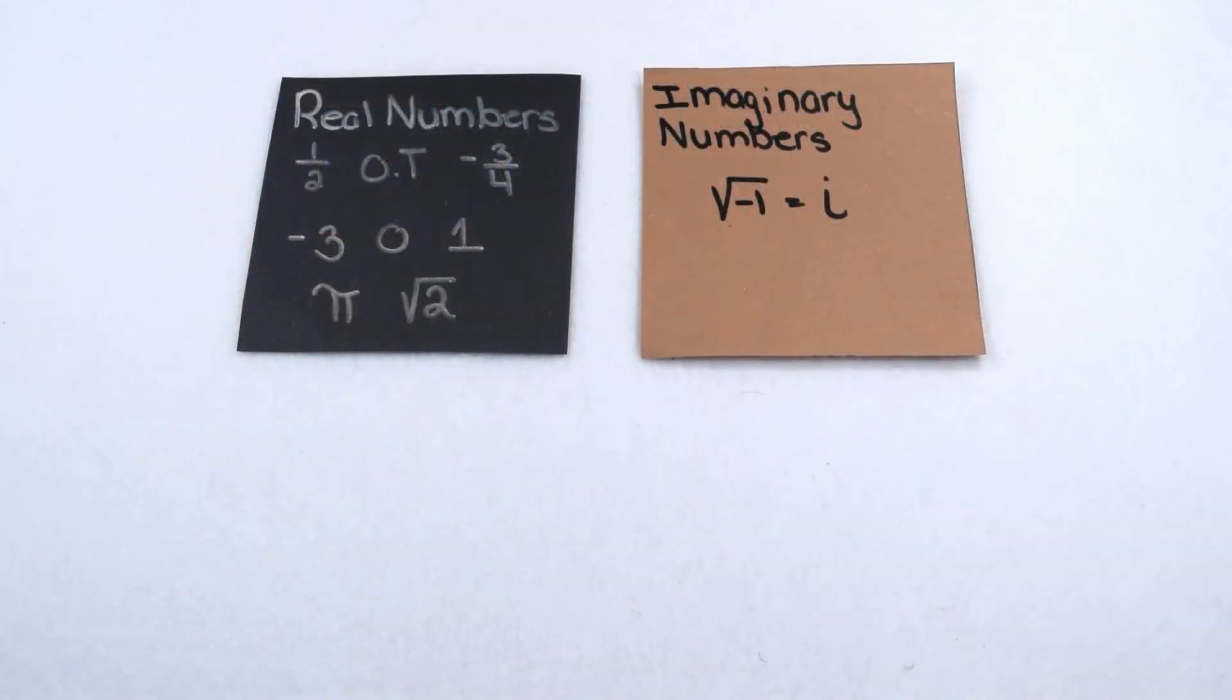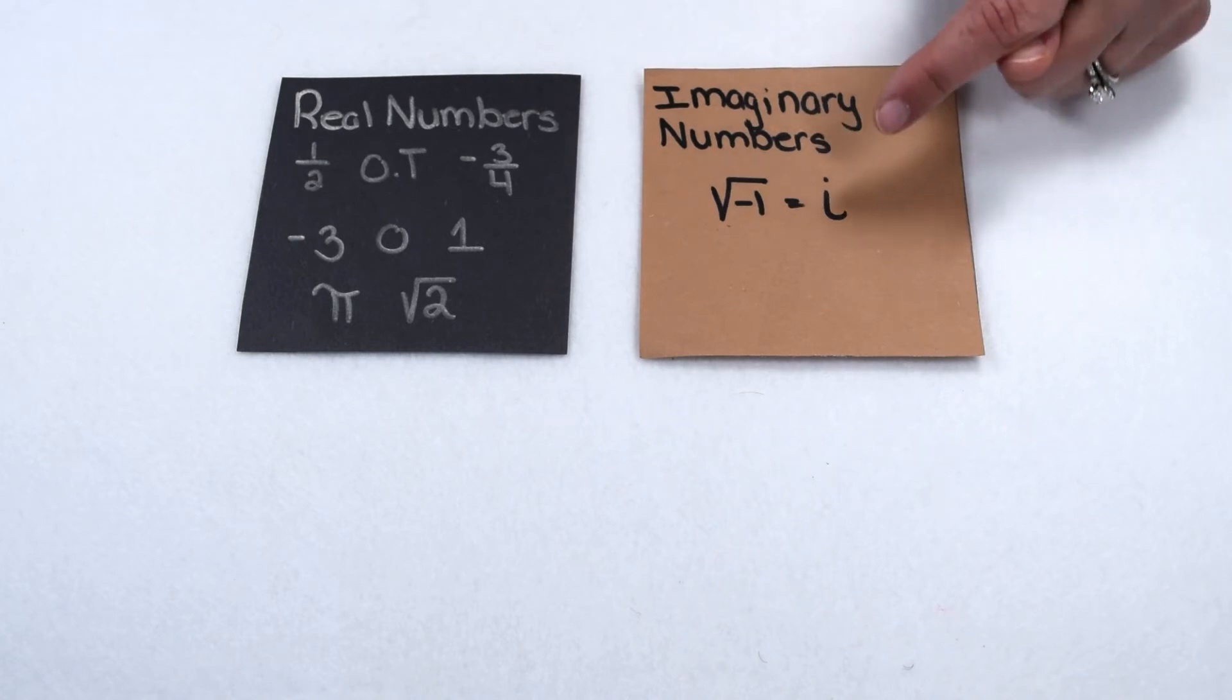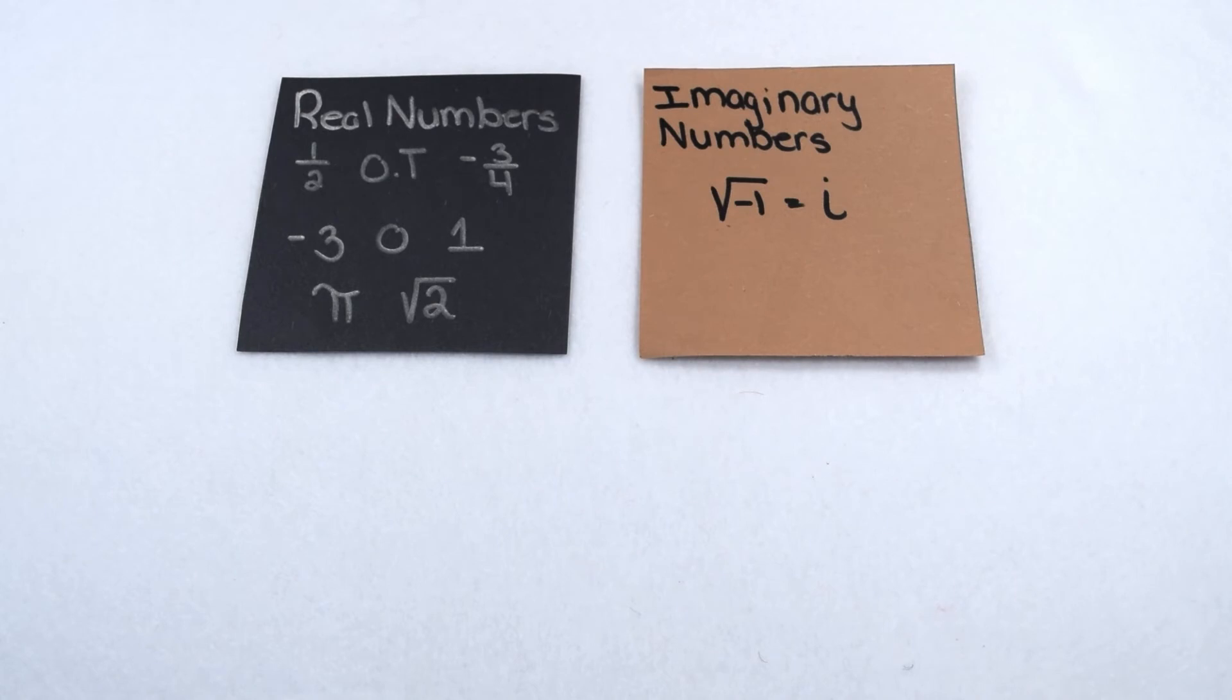There is a category of numbers outside of the real numbers. These would be imaginary numbers. Imaginary numbers come from the square root of negative one. The square root of negative one is i. i is the imaginary number. The square root of any negative number is going to be an imaginary number.